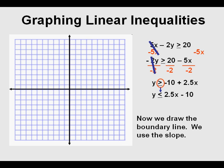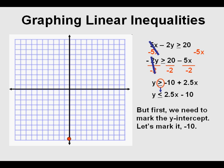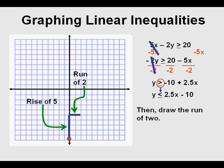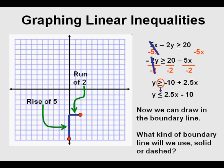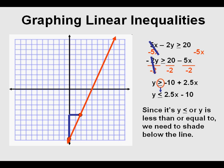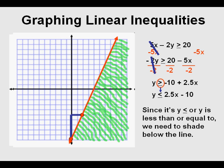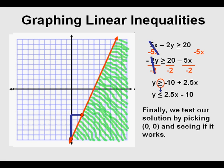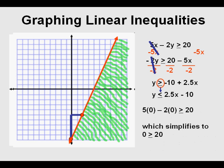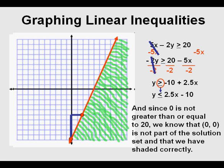Now we draw the boundary line. We start with our y-intercept, which is negative 10. Our rise over run is 5 over 2. We draw our second point and draw the boundary line. Since it's less than or equal to, we use a solid line. Since it's less than, we shade below the line. Finally, we test with (0, 0): 0 is greater than or equal to 20 — that's not true. So (0, 0) is not part of the solution set, confirming we've shaded correctly.